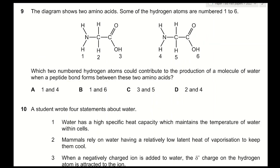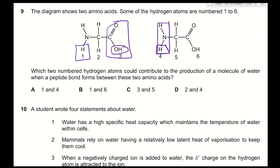Question 9: the diagram shows two amino acids with hydrogen atoms numbered 1 to 6. Which two hydrogen atoms contribute to the production of a water molecule when a peptide bond forms? When a peptide bond forms, a molecule of water is also produced. The peptide bond forms between the hydroxyl group of the carboxyl part and one hydrogen atom of the amino group. It could form between 4 and 3, or 1 and 6. The answer is B.